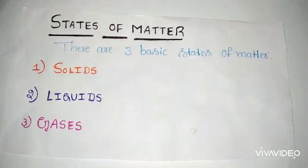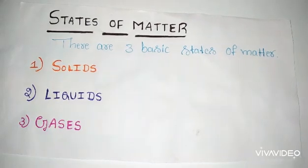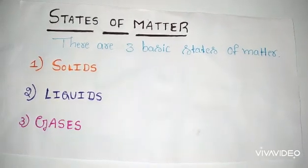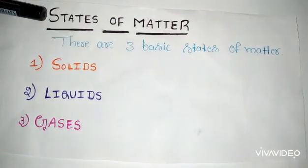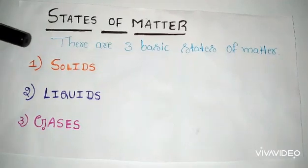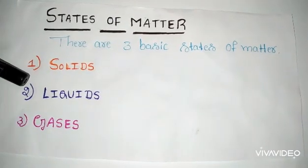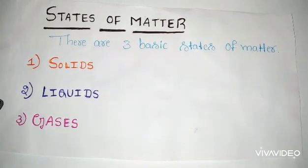Wood, water and air are different forms of matter. Matter exists in nature in different forms called states of matter. There are three basic states of matter. One is solid form. Second one is liquids form. Third one is gases form.